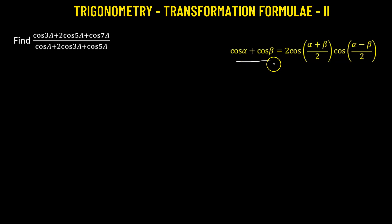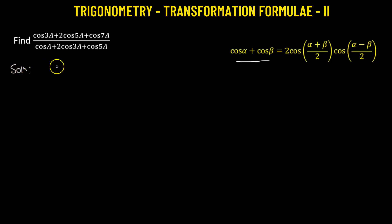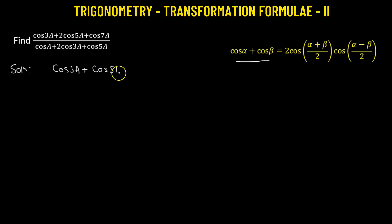If we add two cosine functions, that is going to transform as a product of two cosine functions. We'll rewrite the numerator: we have cosine of 3a added to two times cosine of 5a, but we can split it into two parts so that we get cosine of 5a plus cosine of 5a, and then we have the term cosine of 7a.